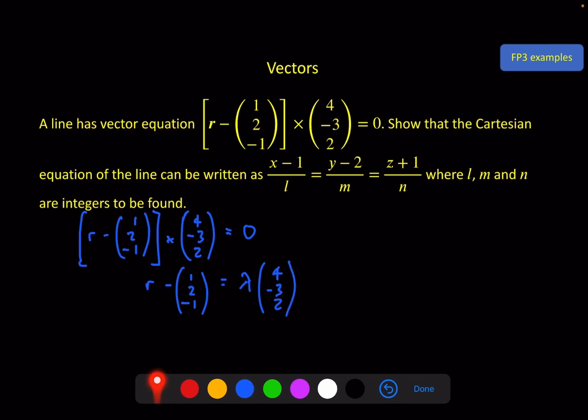Because these two things say the same thing. This is saying that r minus this vector is parallel to this vector. And this equation is saying exactly the same. r minus this vector is parallel to some magnitude of this vector. And from here, I can now say, OK, well, let's change r into (x, y, z). And then we can equate i, j, and k.